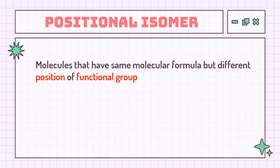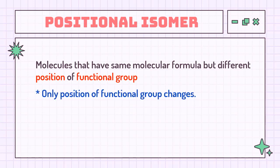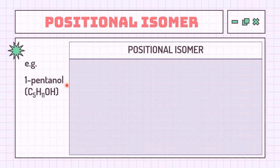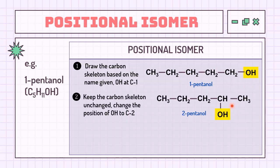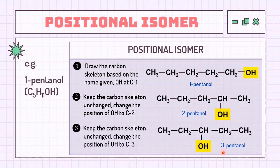In positional isomers, the basic carbon skeleton remains unchanged, but important functional groups are moved around on that skeleton. Given 1-pentanol as an example — the 'pentan' refers to the 5-carbon chain as the longest chain, and the '1-ol' indicates the OH group attached to carbon number 1. To form positional isomers of 1-pentanol, keep the pentane chain as it is and change only the position of the OH to the second carbon. With the longest chain of 5 carbons, another isomer is formed by relocating the OH to the third carbon, known as 3-pentanol.